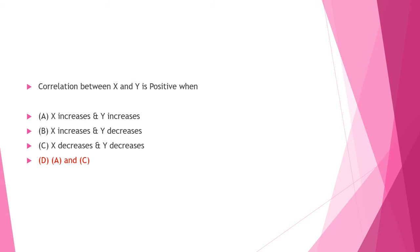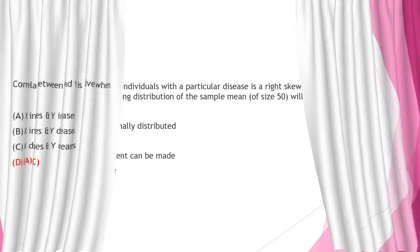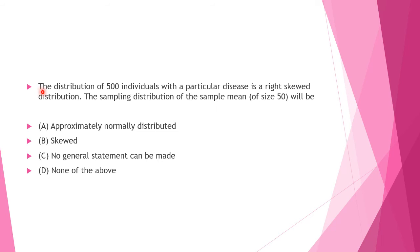Next question: The distribution of 500 individuals with a particular disease is a right-skewed distribution. The sampling distribution of the sample mean of size 50 will be — Option A: approximately normally distributed, Option C: no general statement can be made, Option D: none of the above. Answer is Option A: approximately normally distributed.